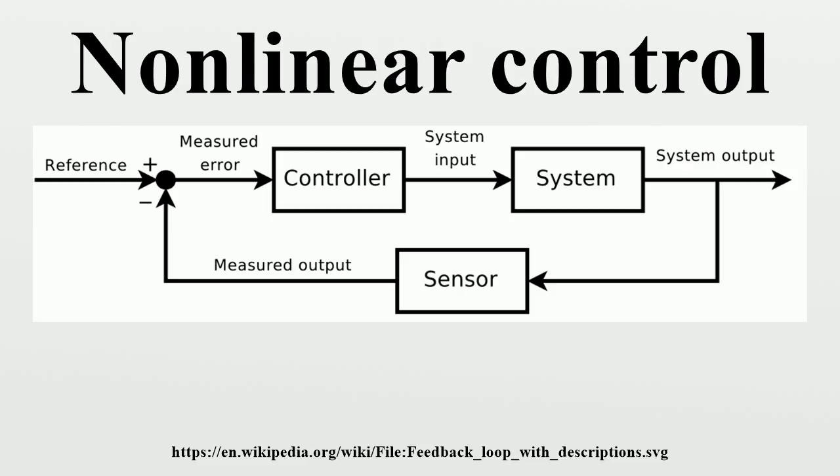Control theory is divided into two branches. Linear control theory applies to systems made of linear devices, which means they obey the superposition principle. The output of the devices is proportional to its input. Systems with this property are governed by linear differential equations.